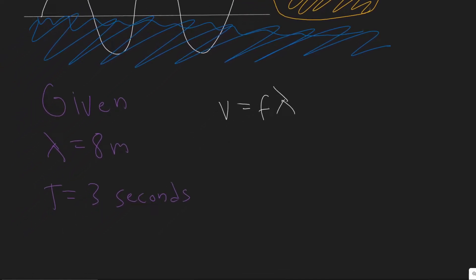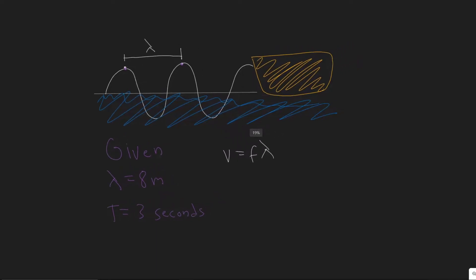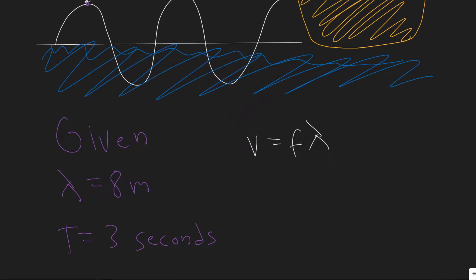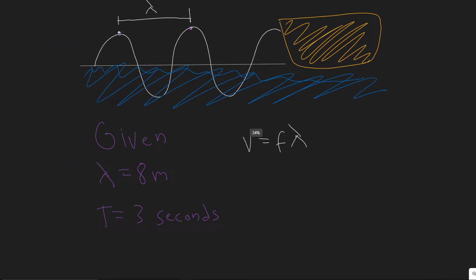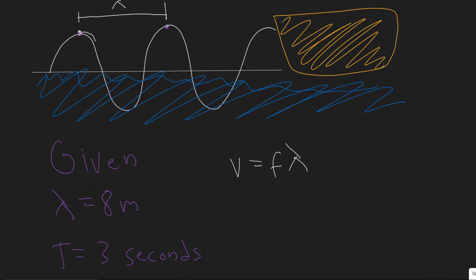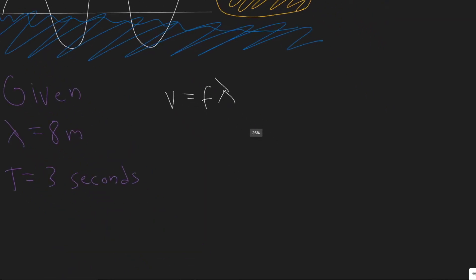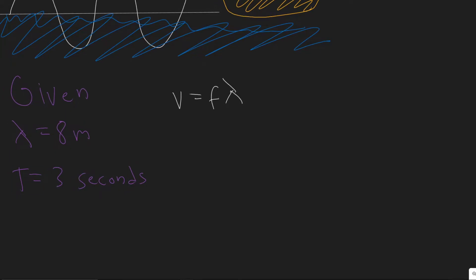We still need to get the frequency. They tell us a crest passes every three seconds, so one instance of the wave occurs every three seconds — that is the period. The period is how long it takes something to go through one cycle or one revolution. So in this case, the period is three seconds.